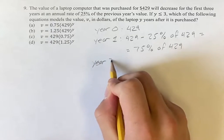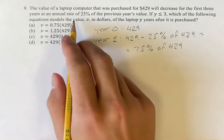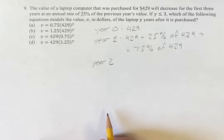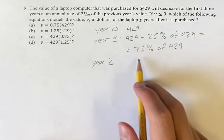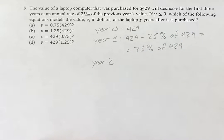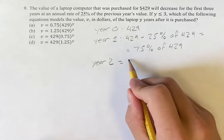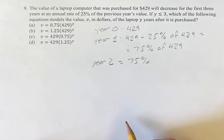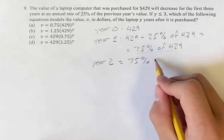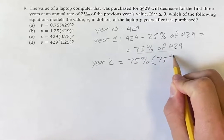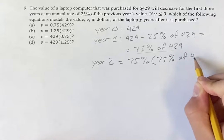Year two, it's going to decrease 25% from the previous year's value, which we've now seen as 75% of the previous year's value. So year two, it can be 75% of the previous year's value. What's the previous year's value? Well, it's this. So it's going to be 75% of 75% of $429.